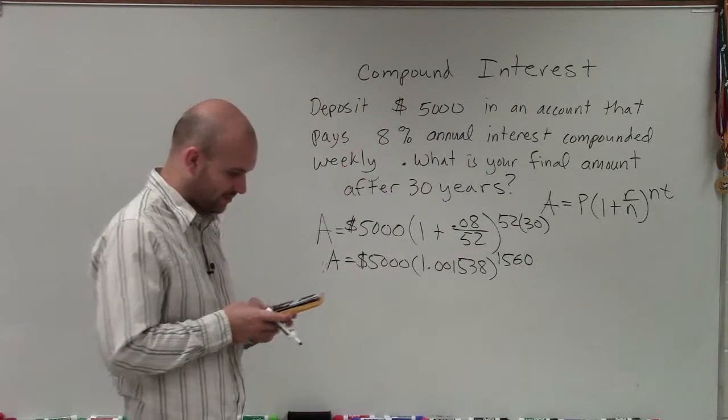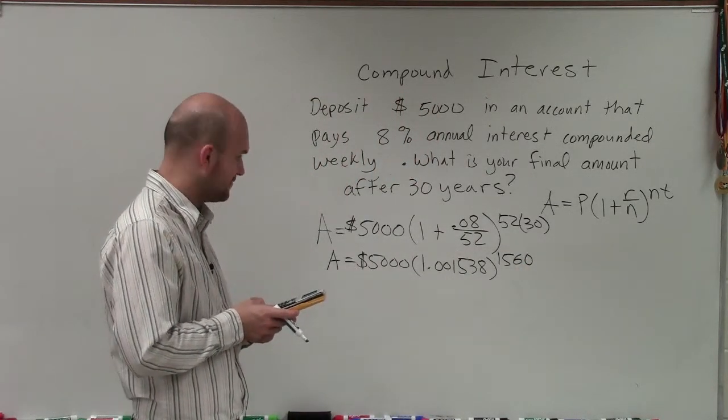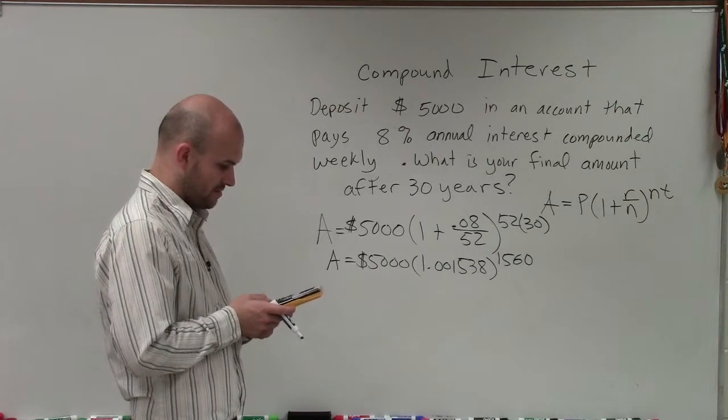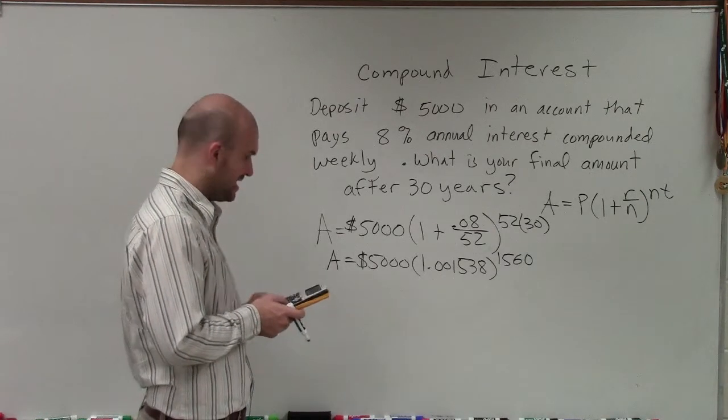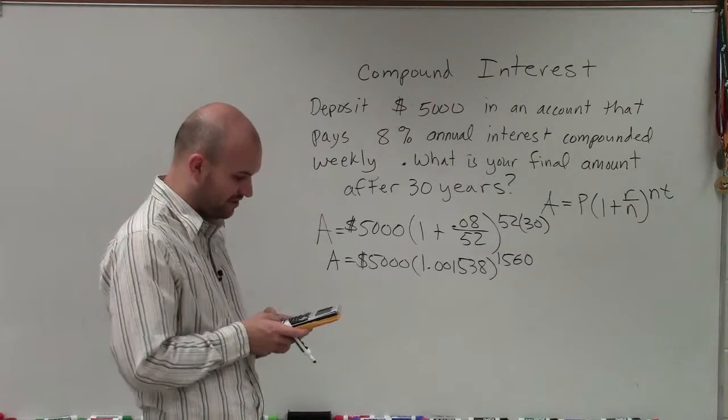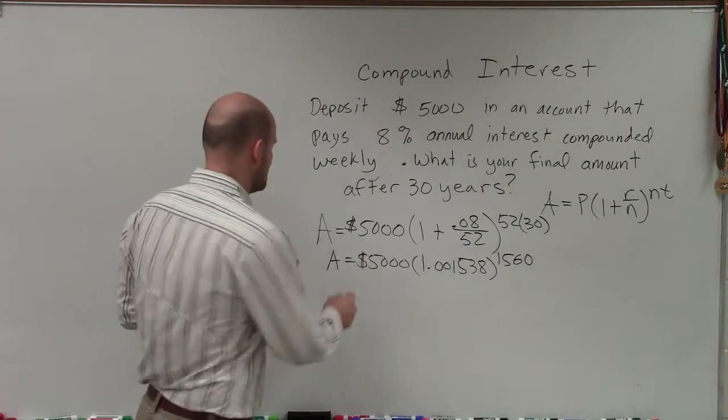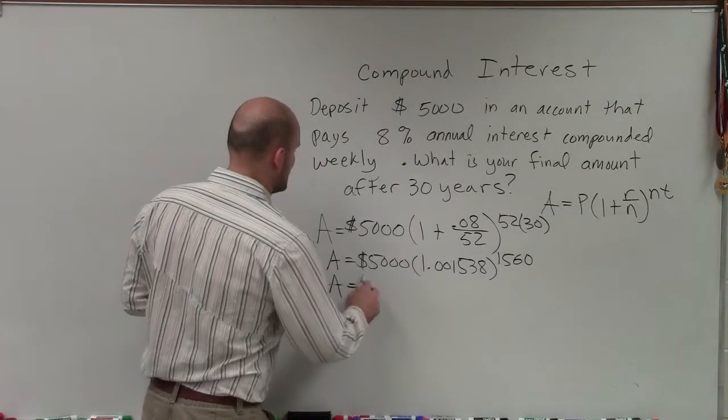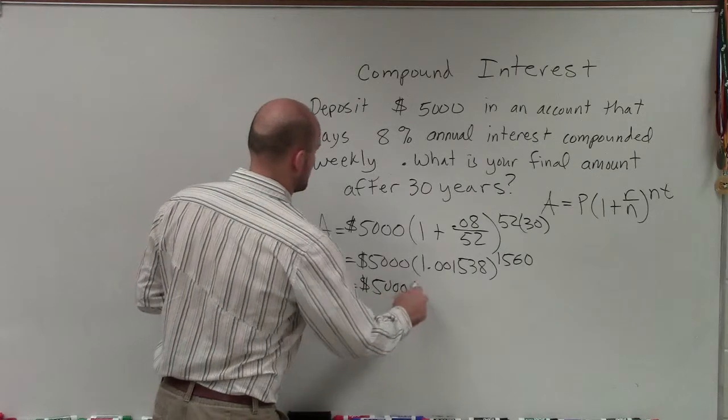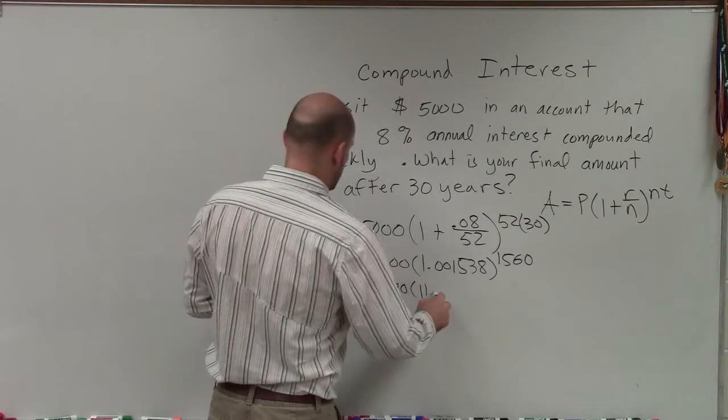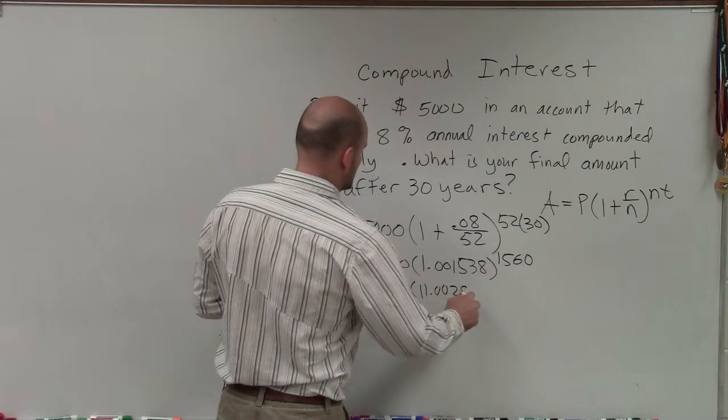So now what I need to do is I need to take 1.001538462, and I need to raise it to 1,560. And that's going to give me A equals 5,000 times 11.0029.